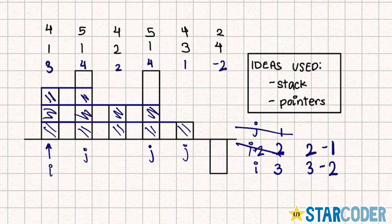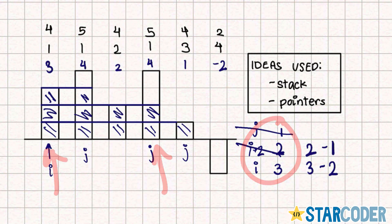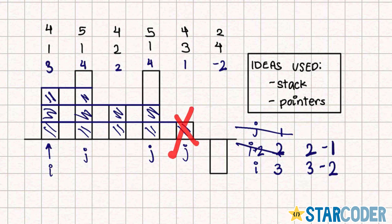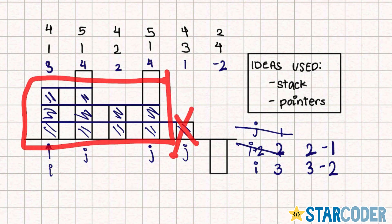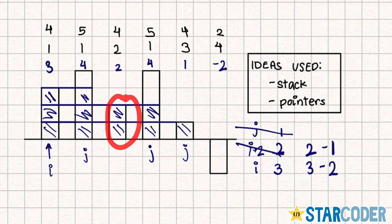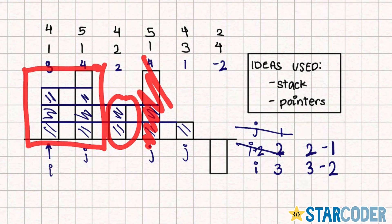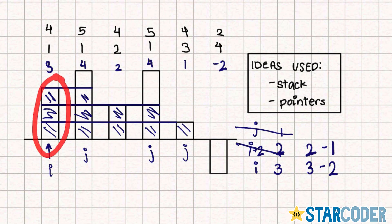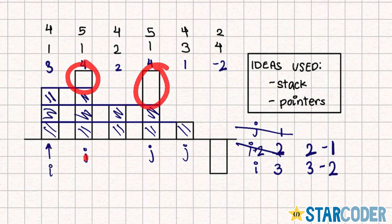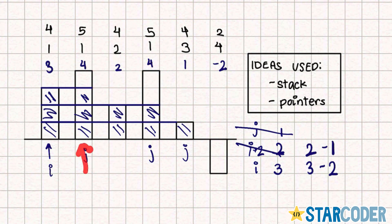This is a little complicated, but the main ideas are: we keep our stack with i and j pointers. As we move, some values turn into zero, and when they do, our range decreases or changes. Once a value becomes zero, we update and shrink the range. We keep going until i is zero, then start again with the remaining non-zero values, assigning a new i and restarting the process.